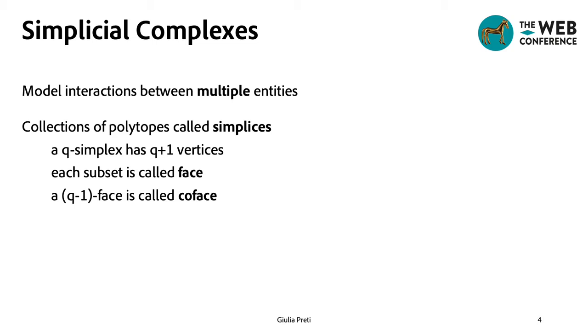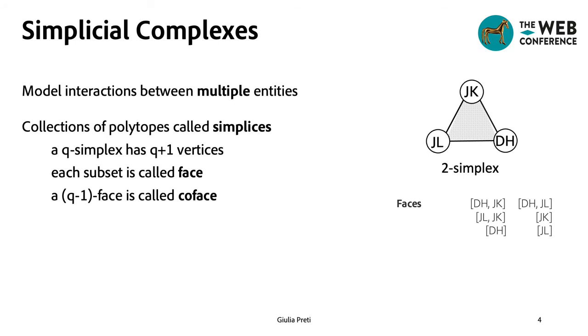Each subset of a simplex is called face and a Q minus 1 face is a co-face. As an example, the dotted triangle on the right is a two-simplex. Each vertex and each edge is a face of the triangle and the edges are the co-faces.